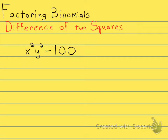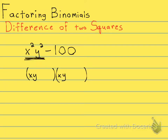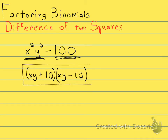So with the difference of two squares, we can go to our two binomials. The first term is going to be xy times xy — that will give us x squared y squared. The last term is going to be 10 times 10, which gives us 100. Now my signs are going to be plus and minus. And that's it.